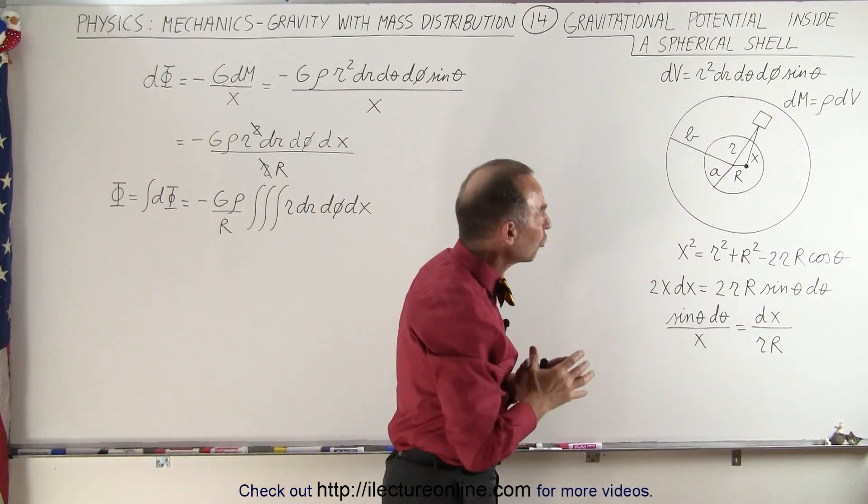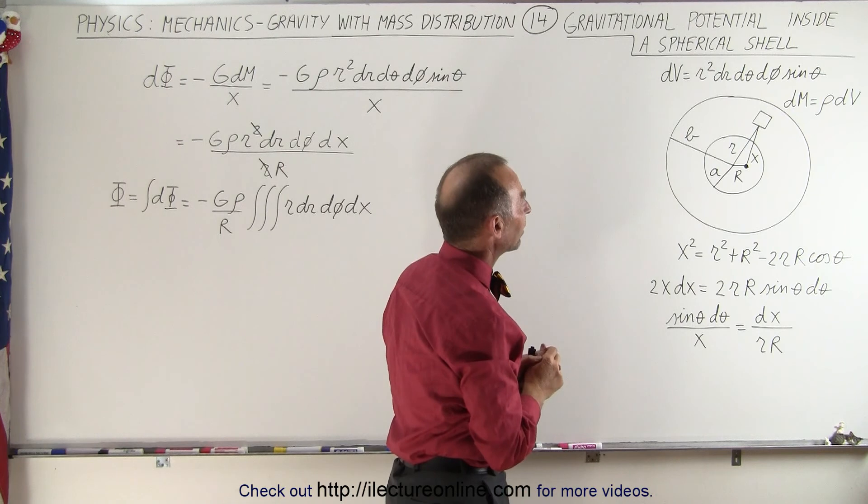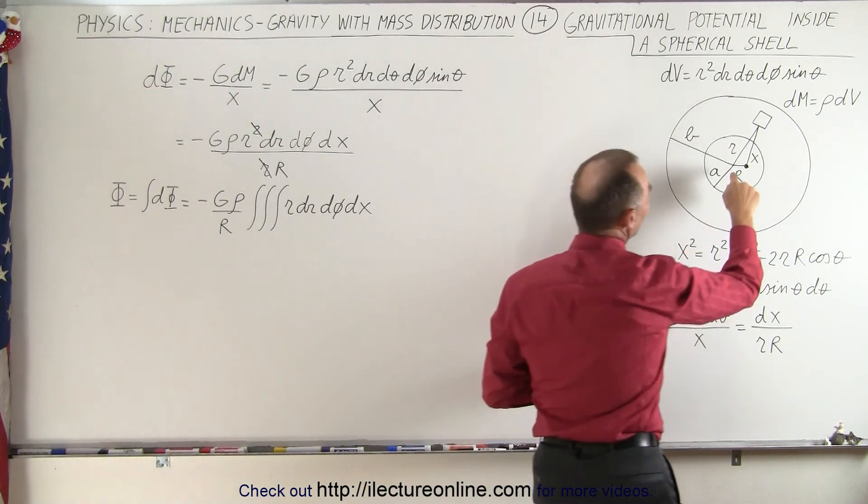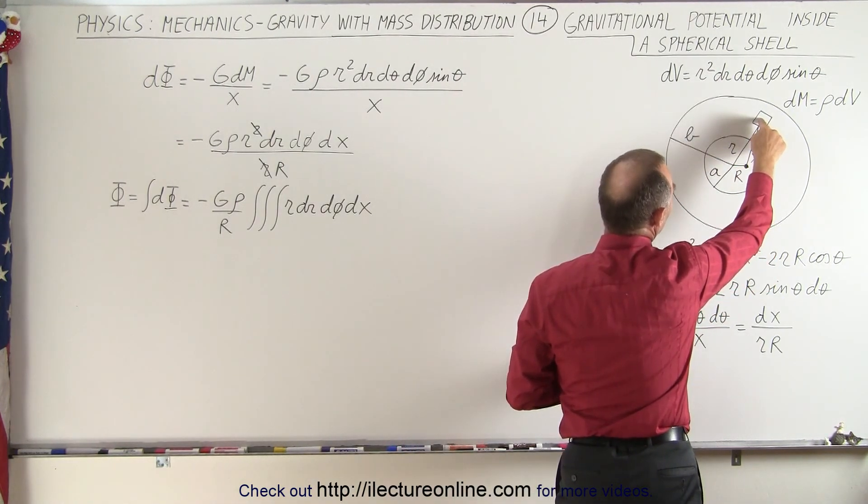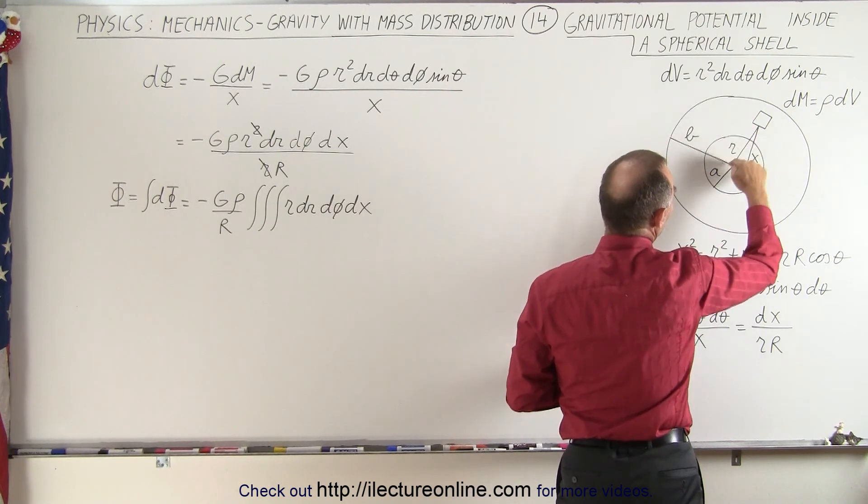We're going to assume uniform density to make it a little bit easier. The distance from the center to the volume element is going to be r, that's going to be a variable.